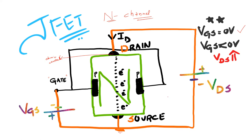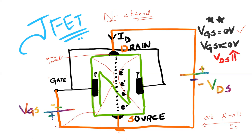Our intention is for electrons to travel from source to drain. When electrons travel from source to drain, the conventional current travels in the opposite direction — that current is the drain current. Initially, with zero gate-source voltage applied, and a reverse bias voltage applied, we can form a depletion layer. As we increase the voltage, the depletion layer grows further.